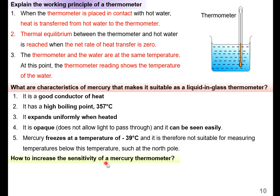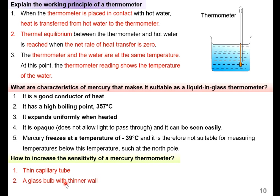To increase the sensitivity of a mercury thermometer: first, make the capillary tube thinner, making it more sensitive. Use a glass bulb with a thinner wall so that heat can transfer easily into the thermometer. Use a smaller bulb so that the lesser mass can heat up even faster.